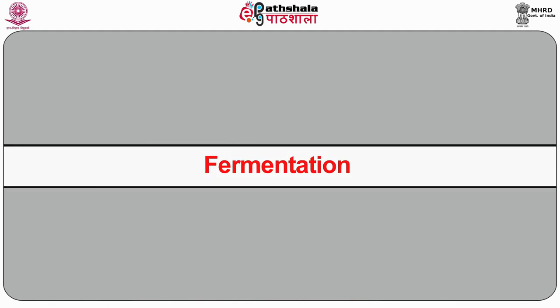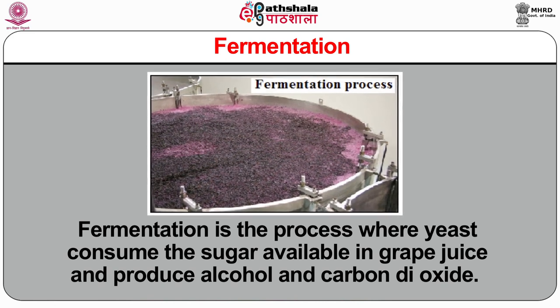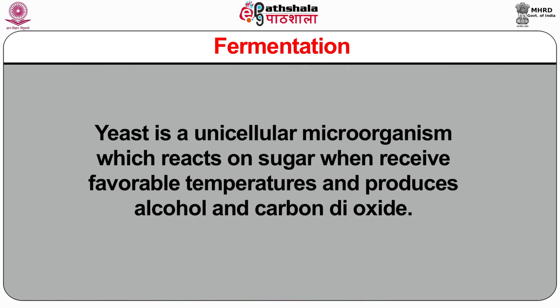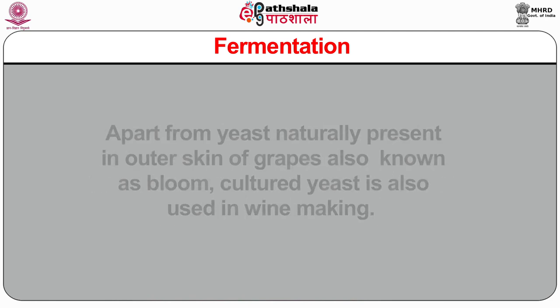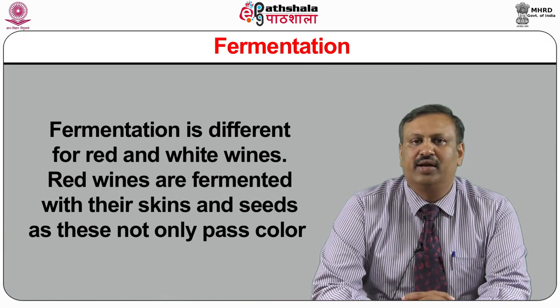Fermentation is the process where yeast consumes the sugar available in grape juice and produces alcohol and carbon dioxide. Yeast is a unicellular microorganism which reacts on sugar when it receives a favorable temperature and produces alcohol and carbon dioxide. Apart from yeast naturally present on the outer skin of the grapes — also known as bloom — cultured yeast made in a laboratory is also used in winemaking. Yeast named Saccharomyces cerevisiae and Saccharomyces apiculatus are generally used for wine making. During fermentation, heat also generates, so the temperature has to be carefully controlled. Fermentation is different for red and white wines.